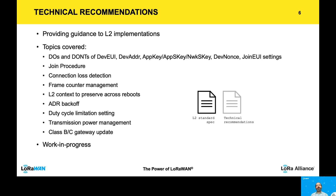We also provide guidance on the join procedure: the frequency of operating the join procedure, how to detect connection loss, and how to manage frame counters so that they are not only used for uniquely identifying frames but also for detecting loss of connectivity on the network side, and how to preserve the link layer context across reboots. This is work in progress and we are hoping to publish this in the coming couple of months. This will be just the very first version of the document and we will be building on top of it, adding more guidance moving forward.